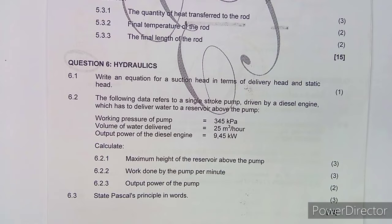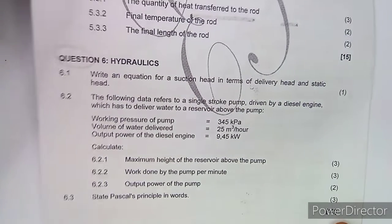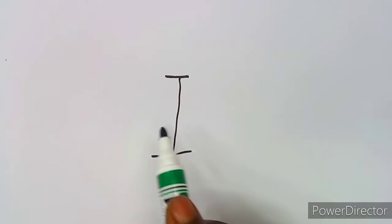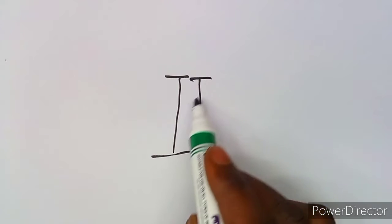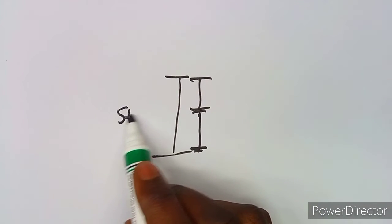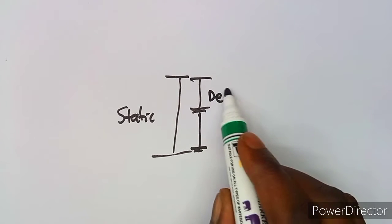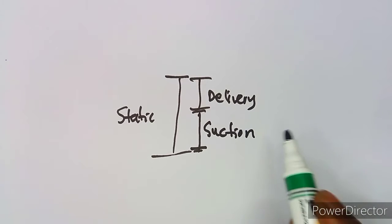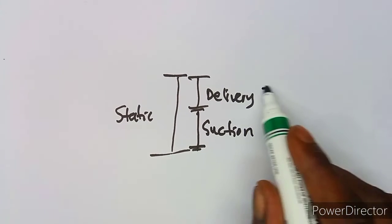The first question is to write down an equation for suction head in terms of the delivery head and the static head. I talked about this equation previously. If you are given this type of equation, just take note: this is your static head, this is your delivery head, and this is your suction head.